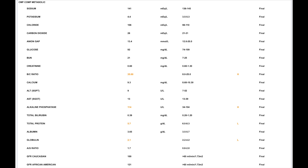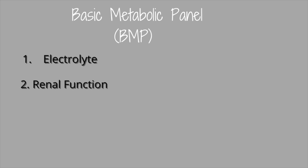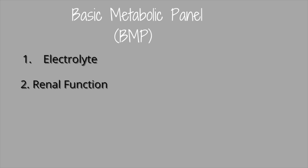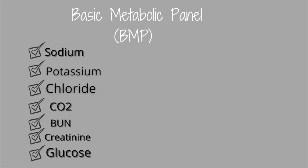Renal function will tell us about the BUN, creatinine, and GFR rate. Liver function gives you the AST, the ALT, total bilirubin, total protein — all of those labs are in a complete metabolic panel. When you order the BMP, however, you get everything minus the liver function, so you only get sodium, potassium, chloride, CO2, BUN, creatinine, and glucose.